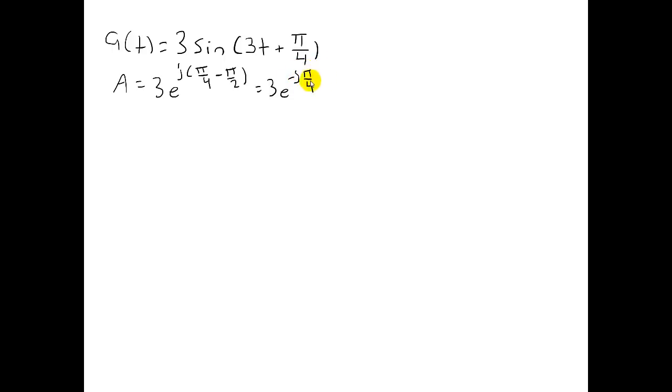Alternatively, if you want to see how I got this, I can again make use of that identity. Write this as 3 cosine of 3t plus pi over 4 minus pi over 2 equals 3 cosine of 3t minus pi over 4. Now you can see that the phasor A equals 3e to the minus j pi over 4.